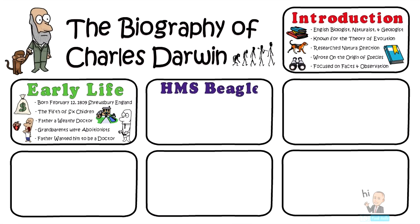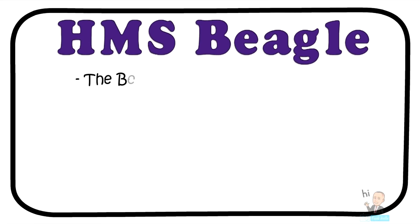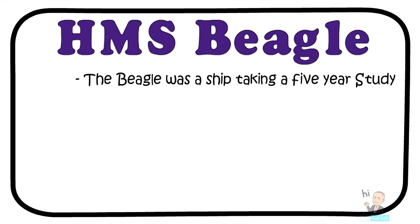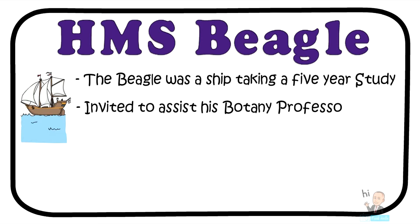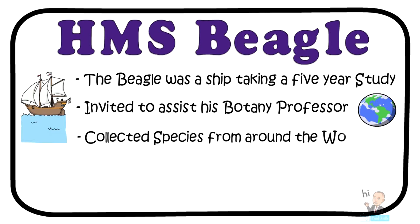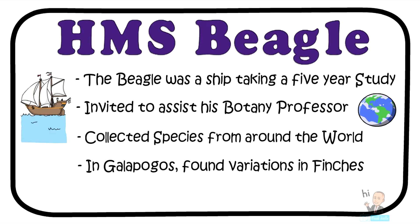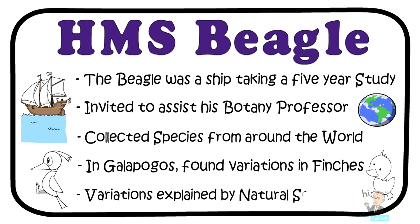The next section is the voyage of the HMS Beagle. The Beagle sailed from Plymouth on the 27th of December 1813 under the command of Captain Robert Fitzroy. Darwin was invited to assist his biology professor as a naturalist scientist. Together, they sailed around the world studying living things. Young Darwin, at age 22, collected species from all around the world. Perhaps his most interesting visit was to the Galapagos Islands, where he found variations in the finches — which are birds. Darwin discovered that there were several species of finches that varied from island to island, and some variations were quite distinct. These variations can be explained by natural selection.